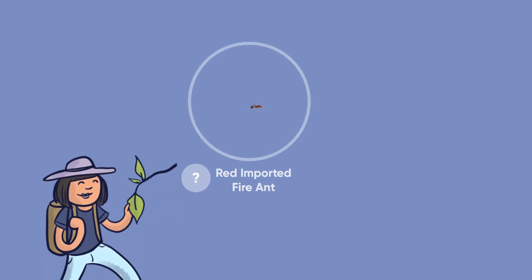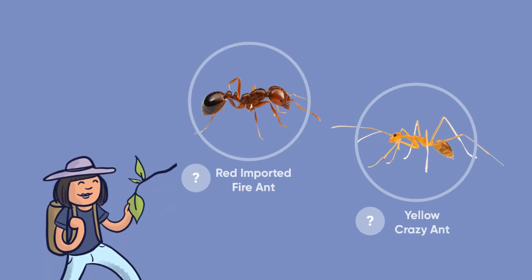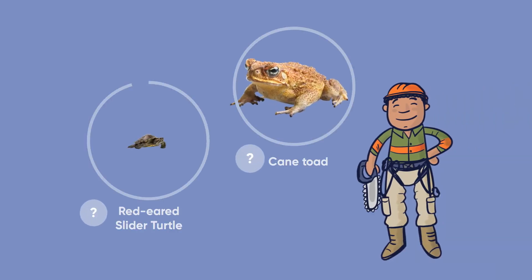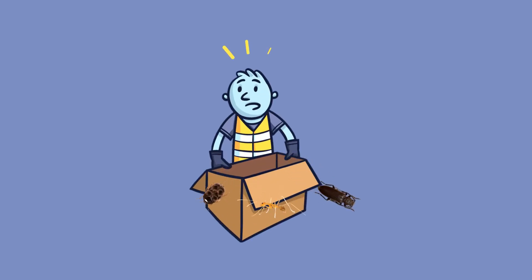Do you know the difference between a red imported fire ant and a yellow crazy ant? How do you spot a cane toad? Is that a red-eared slider turtle? And what do you do if your parcel has a bug in it?